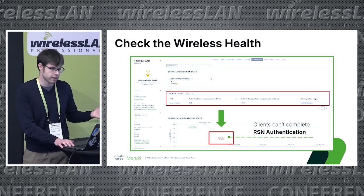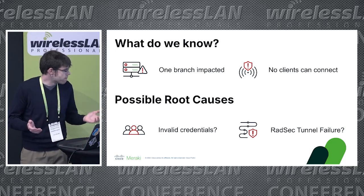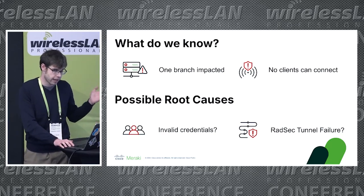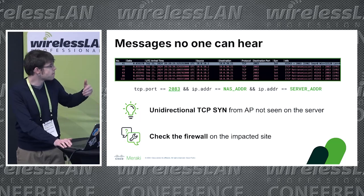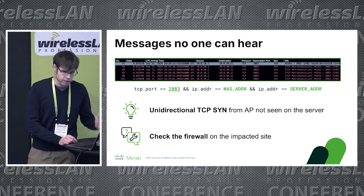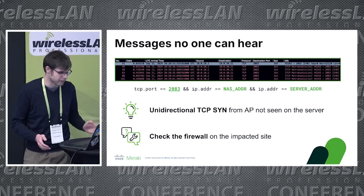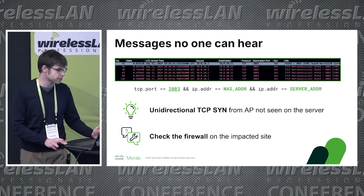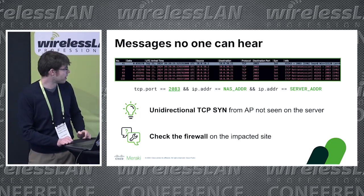What can we do? We can validate what's happening by creating some hypotheses — maybe it's invalid credentials, or a failure in the TLS tunnel. We take a packet capture directly on the dashboard on the Ethernet interface, and we see immediately that there are a bunch of TCP retransmissions. All the SYN bits are set to one, so this tells us the three-way handshake is not even starting. Why? There was a firewall rule upstream of that impacted network filtering TCP port 2083, implemented before our RadSec rollout.